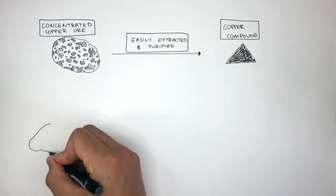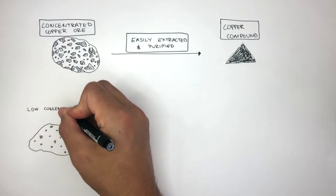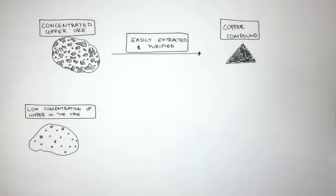Now in this example, I'm drawing an ore where there is a lot less copper. Therefore, we say there is a low concentration of copper in the ore. Because there is a low concentration of copper in the ore, special steps need to be taken to be able to extract the copper from the ore.